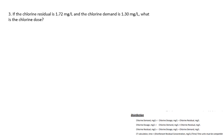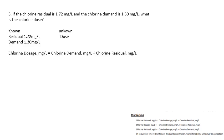Question number three: if the chlorine residual is 1.72 mg/L and the chlorine demand is 1.30 mg/L, what is the chlorine dose? The residual is 1.72, the demand is 1.30, and the unknown is the dose. Using the dose formula — chlorine demand plus chlorine residual — plugging in 1.30 mg/L plus 1.72 mg/L gives a dose of 3.02 mg/L.